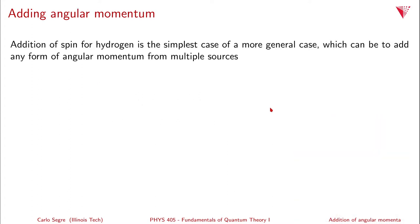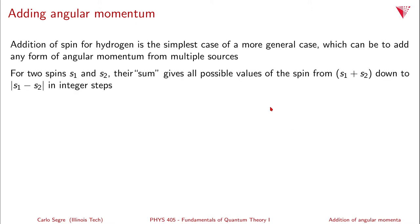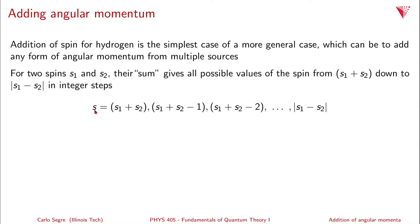Addition of spin for hydrogen is the simplest case. A more general case is adding angular momenta of any kind — that is orbital angular momentum or intrinsic angular momentum from multiple sources. If we have two spins, S1 and S2, their sum gives all possible values of the spin from S1 plus S2 down to |S1 minus S2| in integer steps. Therefore, S can take on the values S1+S2, S1+S2−1, S1+S2−2, and so on down to |S1−S2|.